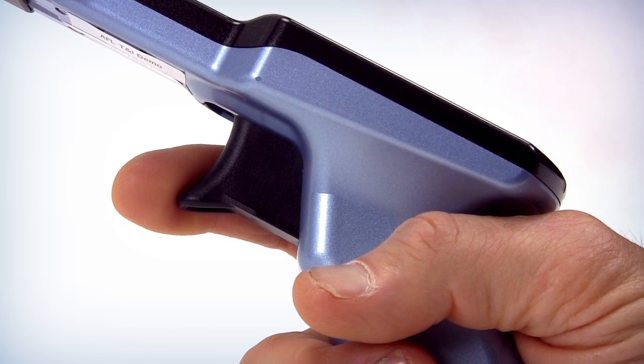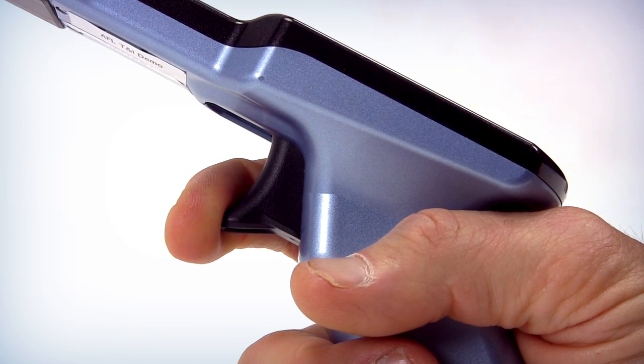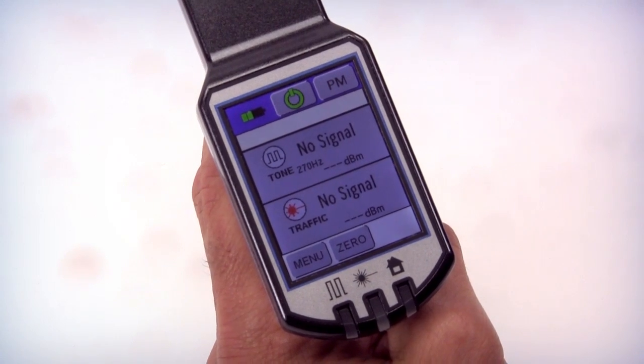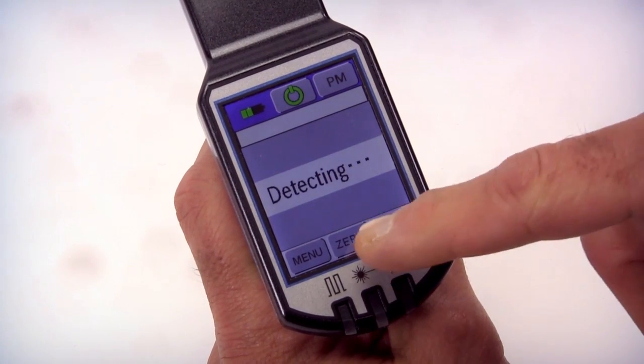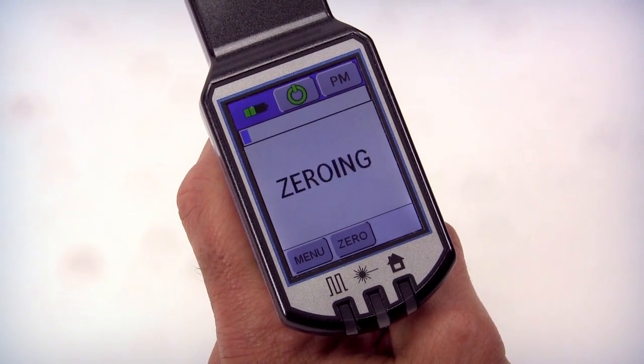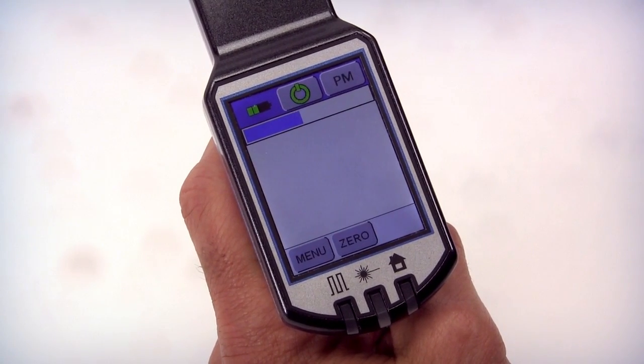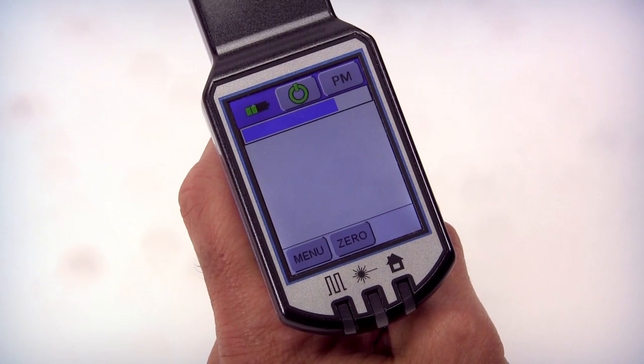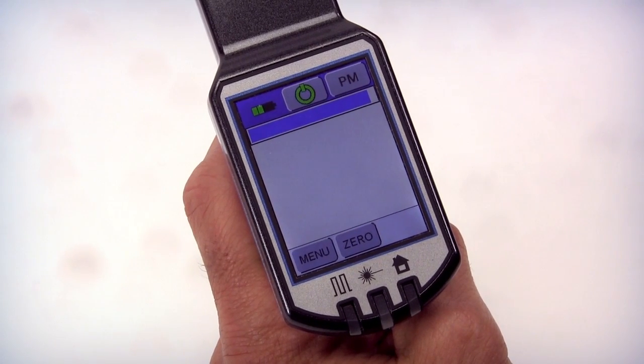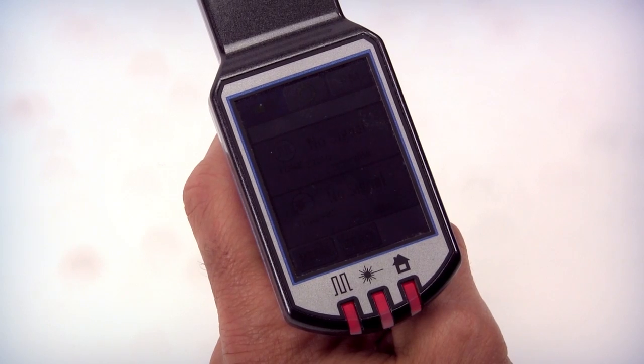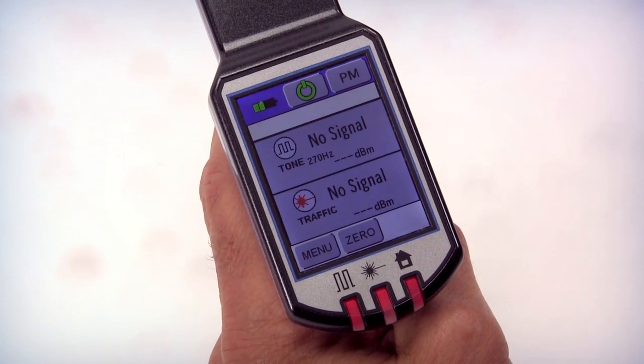This is accomplished by pulling the trigger and holding it. If the trigger lock is engaged, simply pull the trigger and release it. Now select the zero button located in the lower center of the touch screen. The screen should flash zeroing for approximately three seconds before returning to the measurement screen. The device is now ready to take measurement.